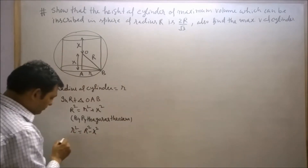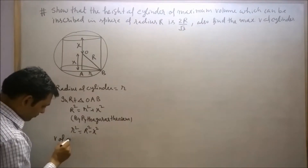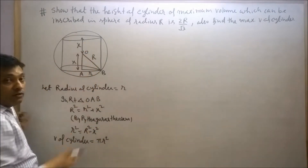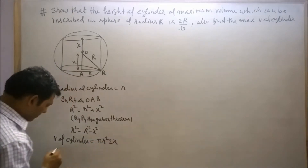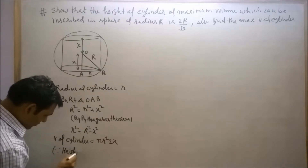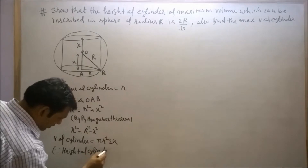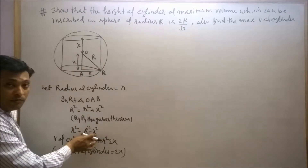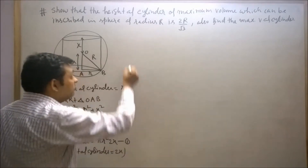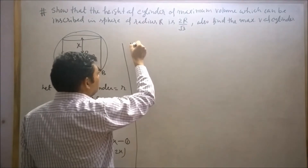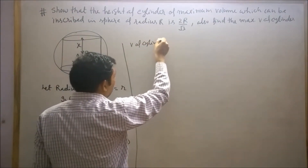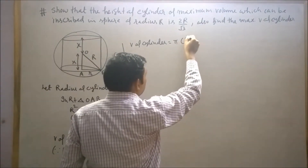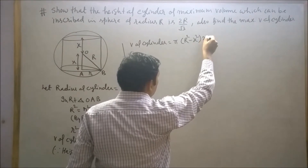We know that the volume of a cylinder is π r² h. Here h is 2x, since the height of the cylinder equals 2x. Substituting r² as capital R squared minus x squared, the volume of the cylinder equals π(R² − x²) into 2x.